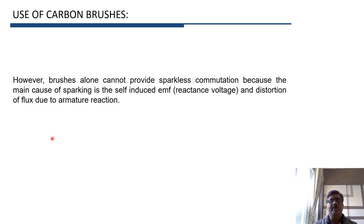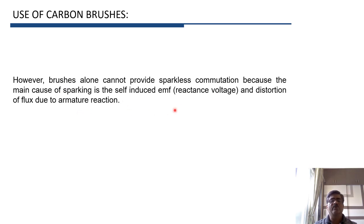One important thing to note is that just by using carbon brushes it is not possible to obtain sparkless commutation, because the main causes of sparking at brushes are the reactance voltage and distortion of flux due to armature reaction. To overcome these, we have to use the second method — the EMF method — which we will see in our next video.